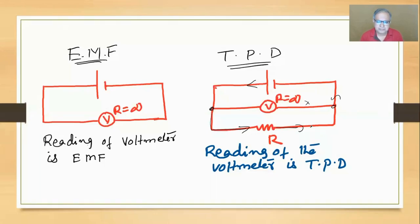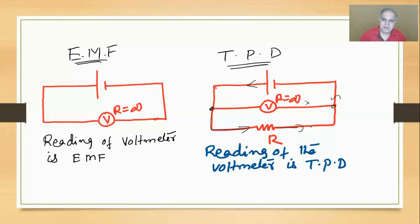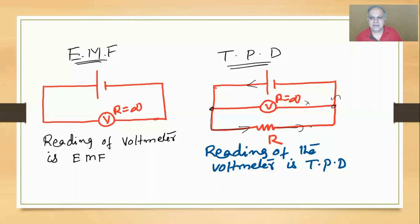When I start doing the numericals that becomes more clear. As a basic idea: it is possible to measure the potential difference when current is not flowing, and that should be greater than when current flows inside the cell. After doing numericals, this becomes even more clear.